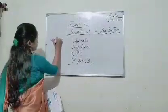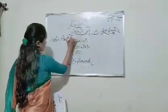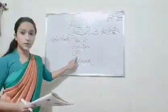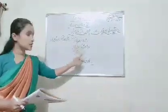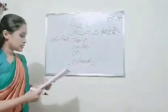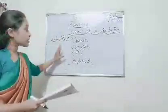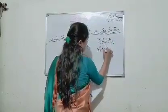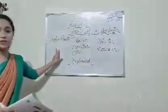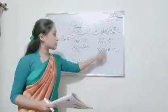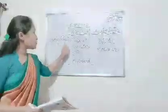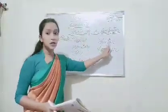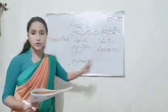So, there are four main parts of a computer: mouse, monitor, CPU, and keyboard. And excluding these, a few more parts are there — printer and scanner.